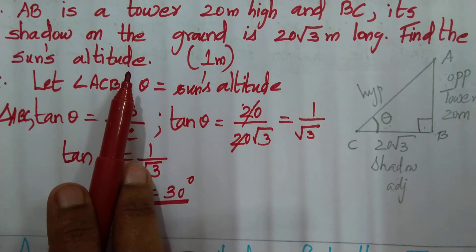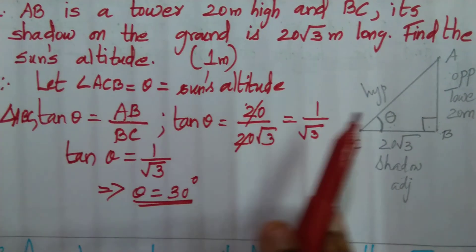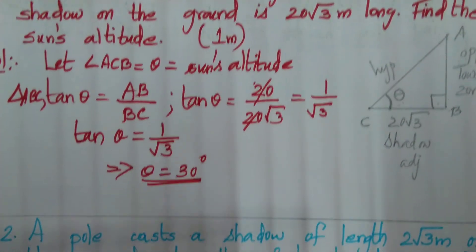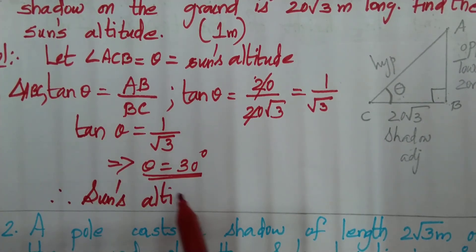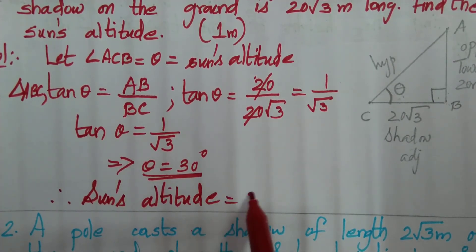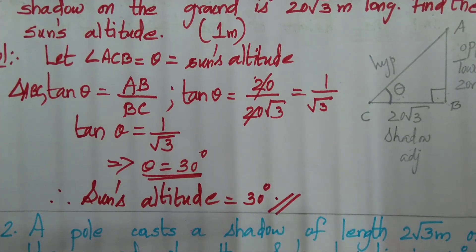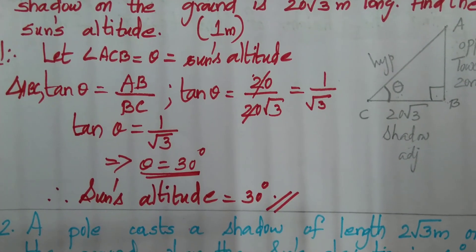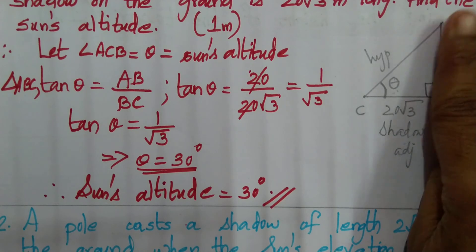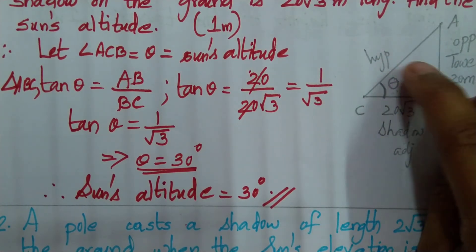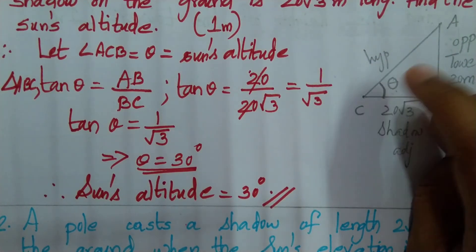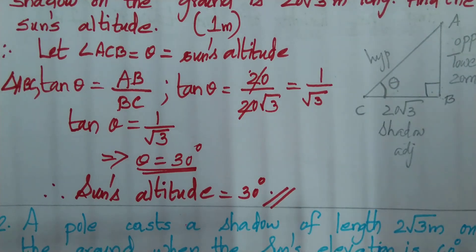Therefore, the sun's altitude is equal to 30 degrees. To summarize: the tower, the shadow, the line from the tip of the shadow to the top of the tower — that angle is the sun's altitude, which equals the angle of elevation.